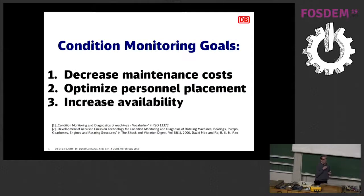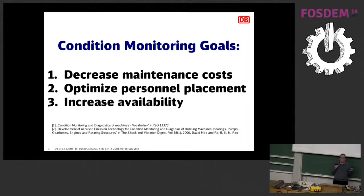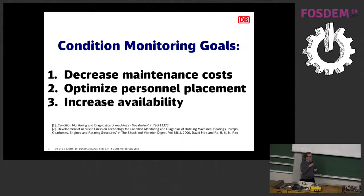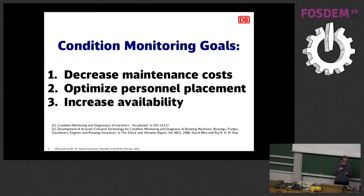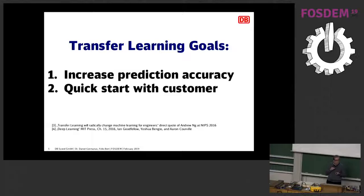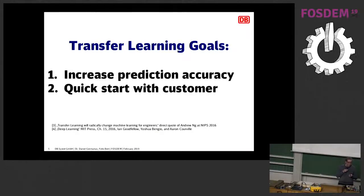In a nutshell, our condition monitoring goals are to decrease maintenance costs, optimize personnel placements since service personnel cannot be everywhere all the time, and increase the availability of machinery for our customers. Our transfer learning goals are to increase prediction accuracy and also to allow a quick start with the customer.